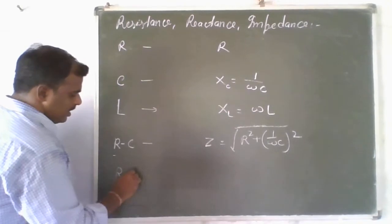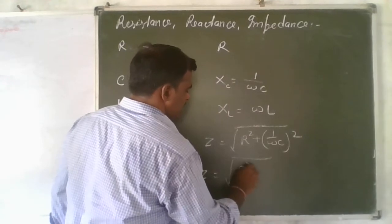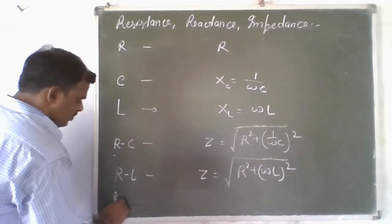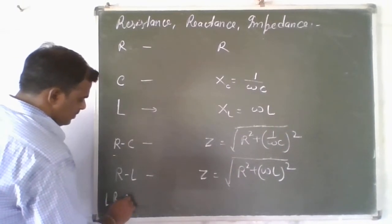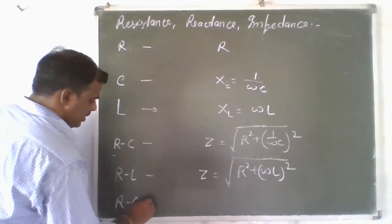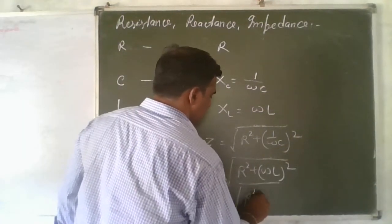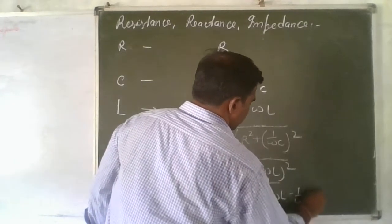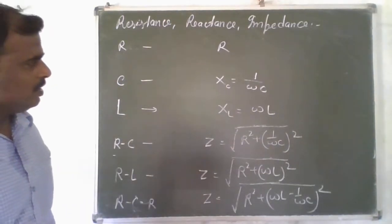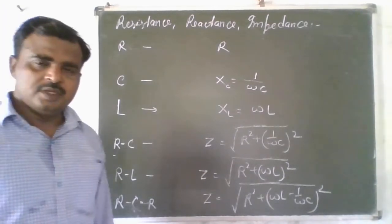If there is R and L — resistance and inductor — the impedance will be the square root of R squared plus (omega L) squared. And if there are all three components — inductor, capacitor, and resistance — the impedance equals the square root of R squared plus (omega L minus 1 upon omega C) squared. These are the formulas for reactance and impedance for different types of circuits, which we will derive in the next chapter.